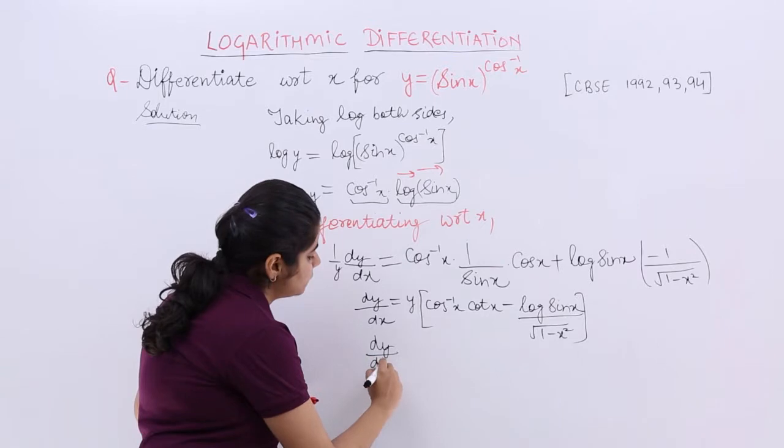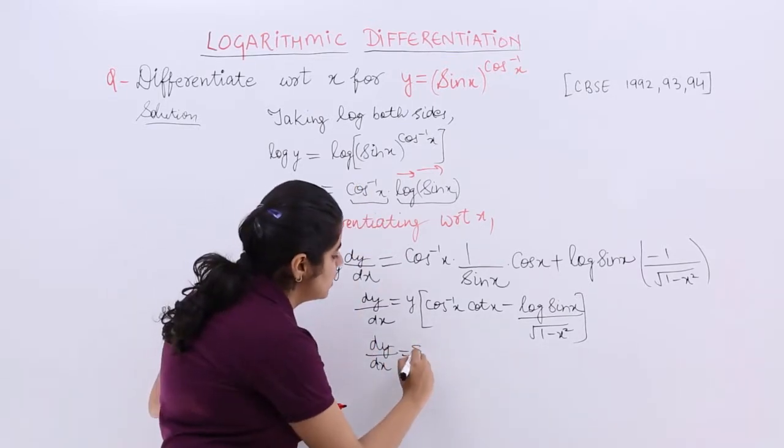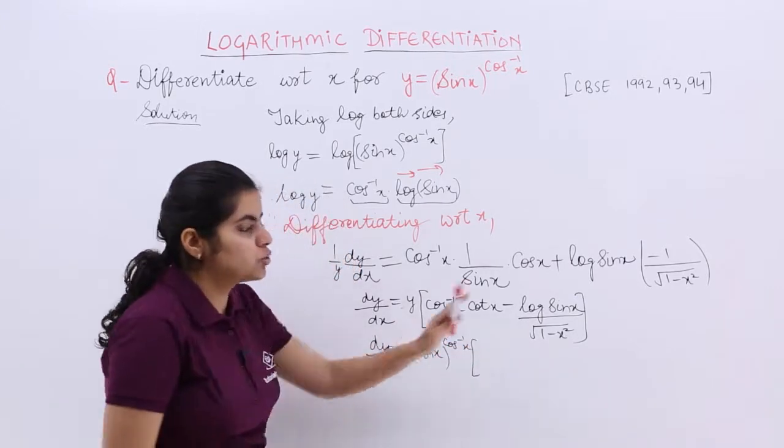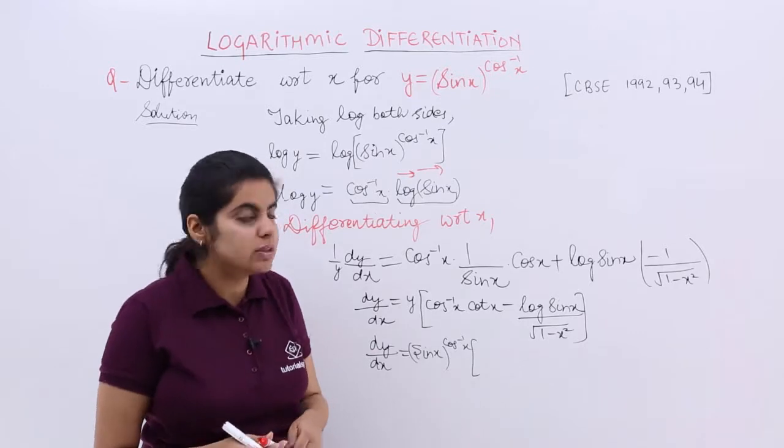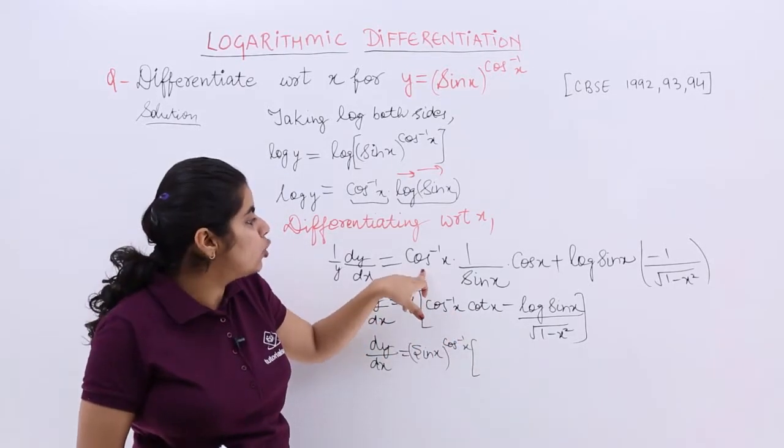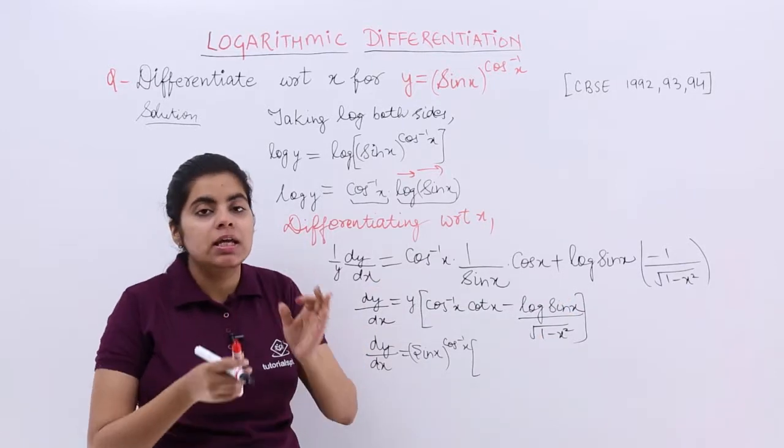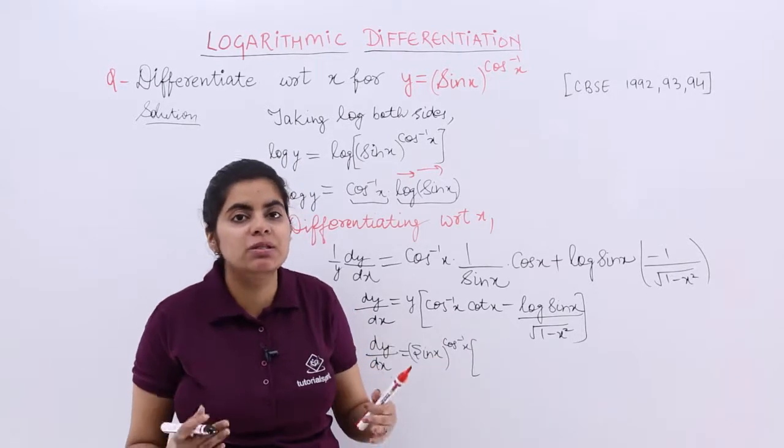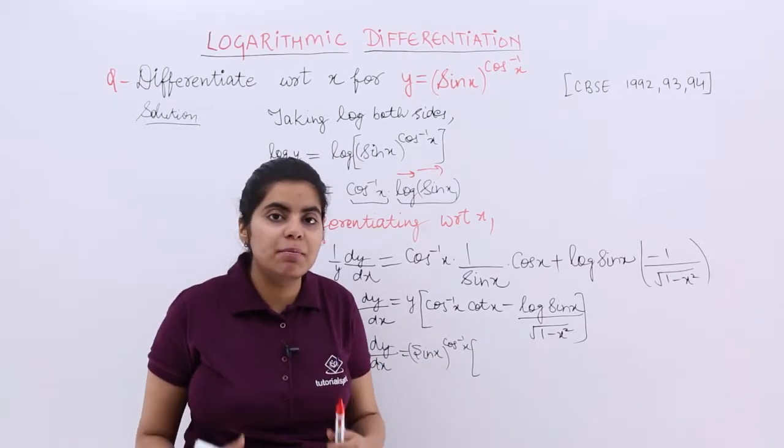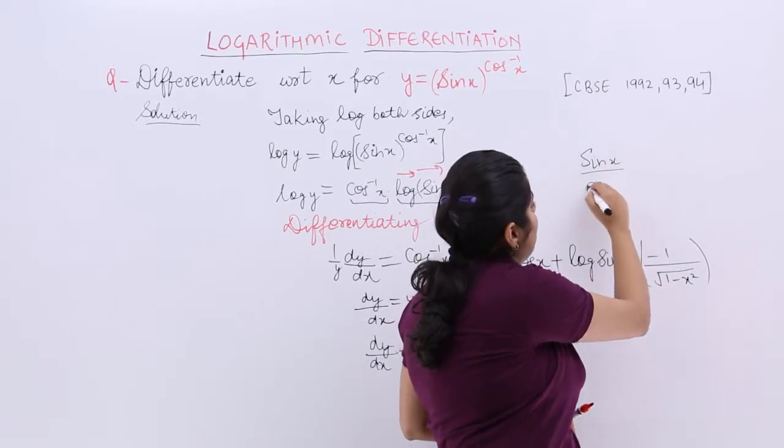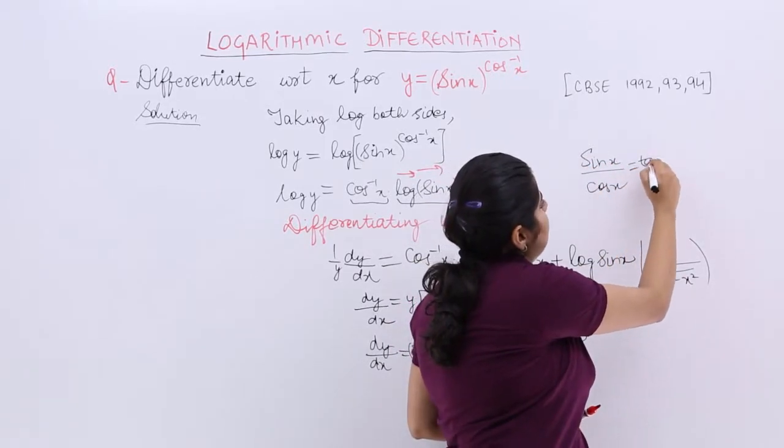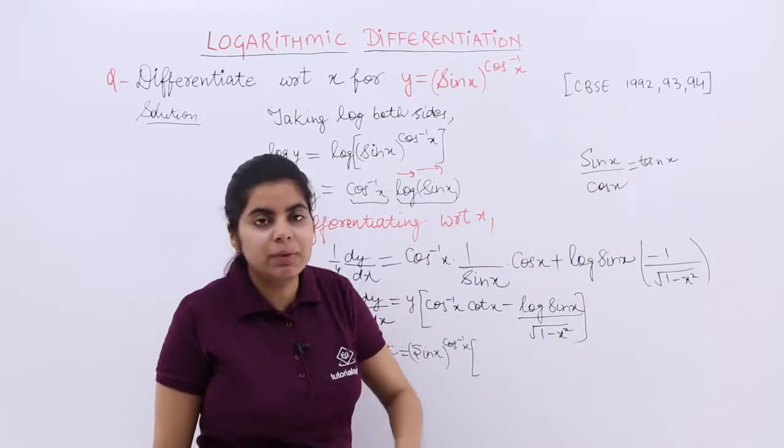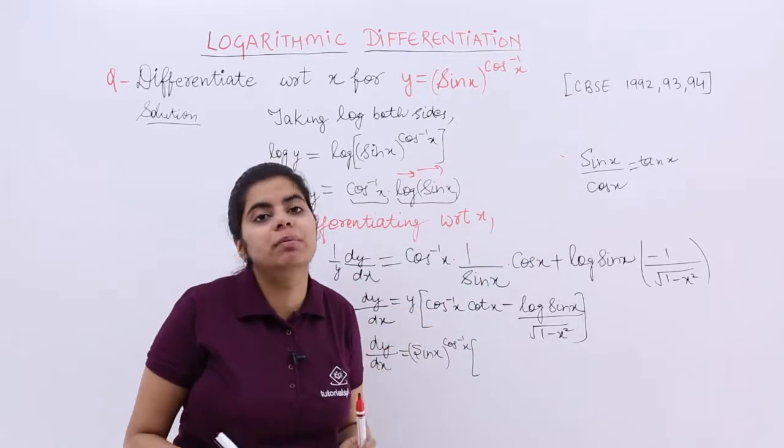So it is dy by dx is equal to sin x raised to the power cos inverse x and the rest to follow. One thing more that some students may not make it cot x rather they may do cos inverse x and cos x cancellation. See simplification leaving the last step of the answer same is not possible in differentiation questions usually. I may write sin x upon cos x as tan x. This answer is correct if I leave in the form of tan x, again it will be correct if I leave in the form of sin x upon cos x it will be correct.